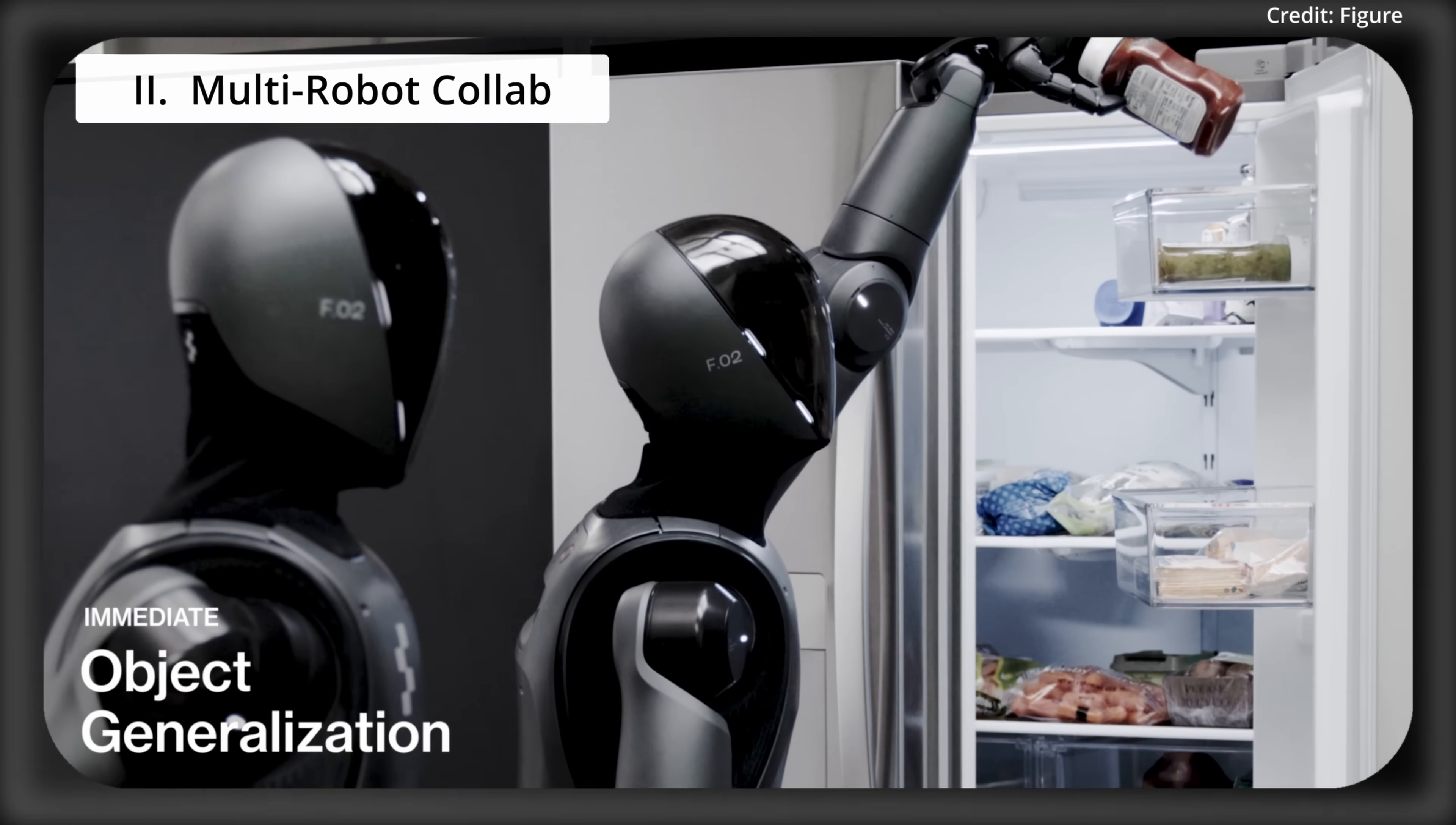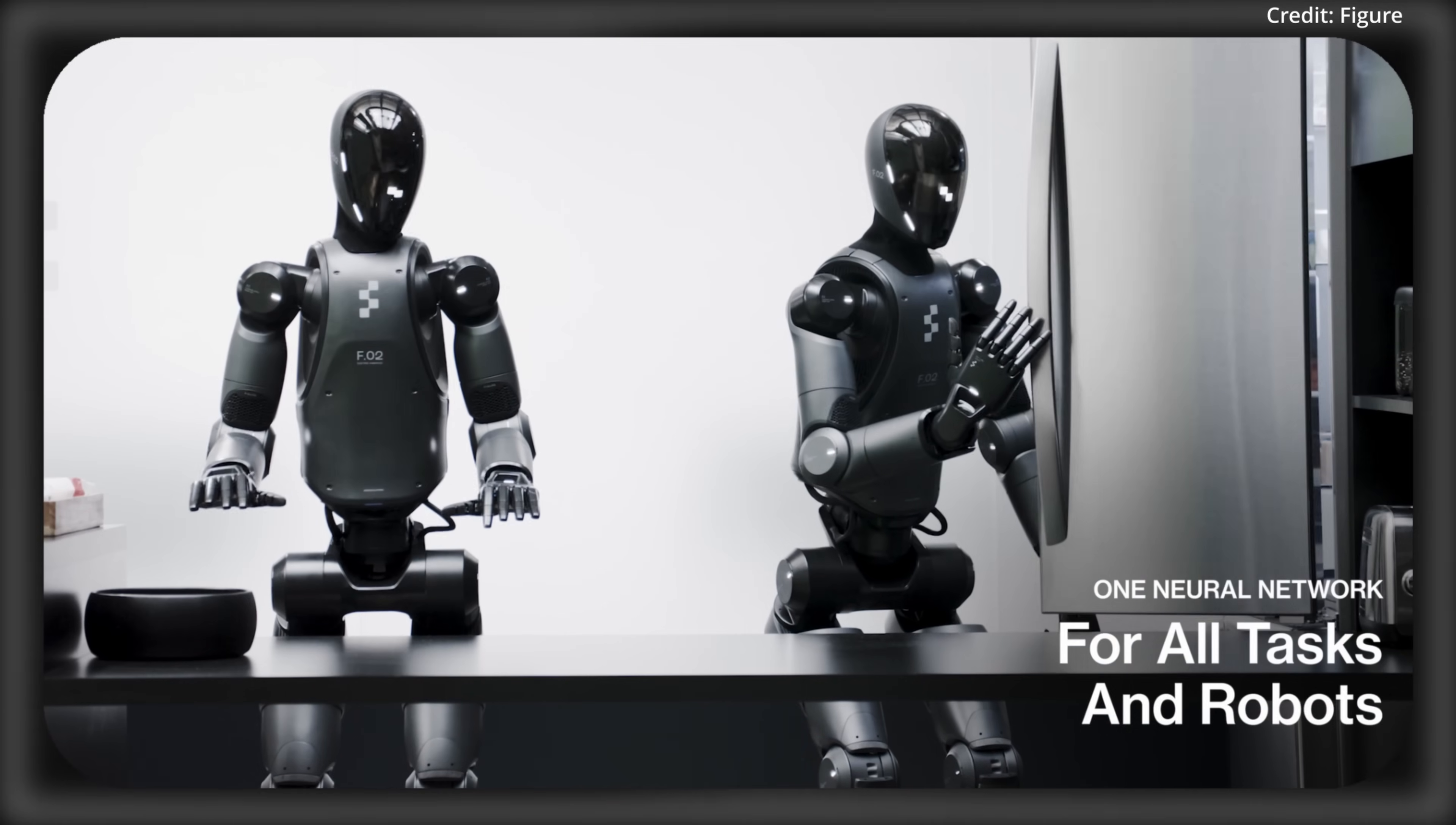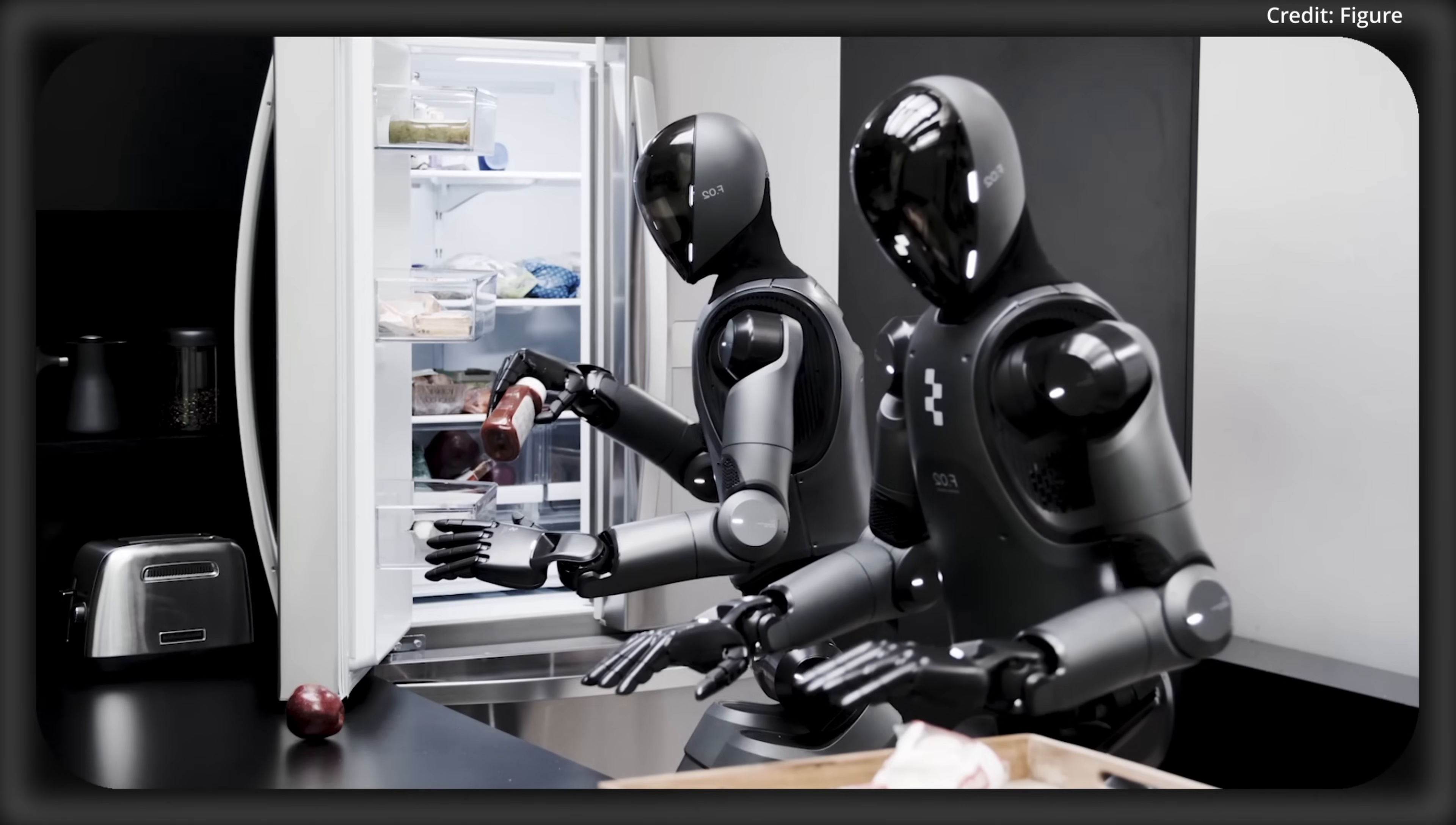Number two: Multi-robot Collaboration. Helix breaks more ground as the first-ever vision language action model to synchronize two robots for shared, long-horizon tasks without prior training. In fact, this was demonstrated with two Figure robots teaming up to store groceries, grabbing items like crinkly bags or odd-shaped veggies that they've never seen before.